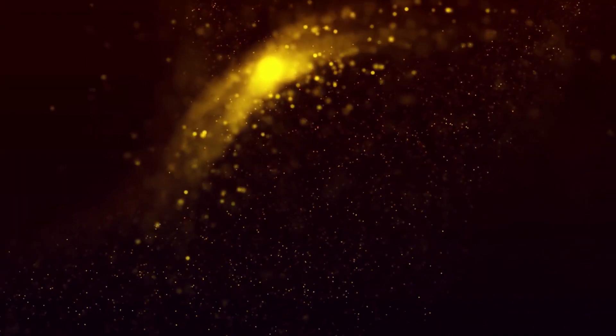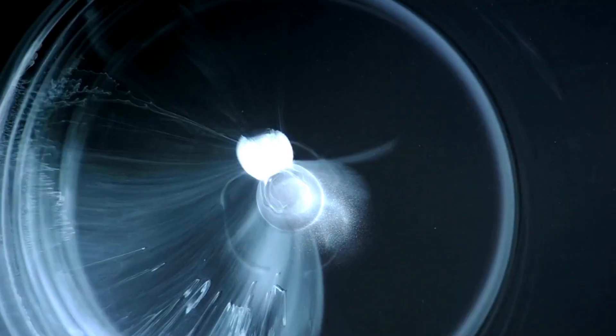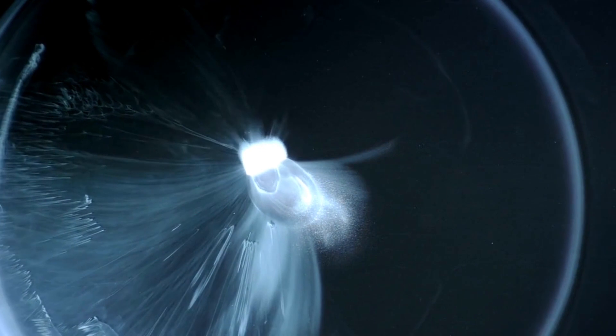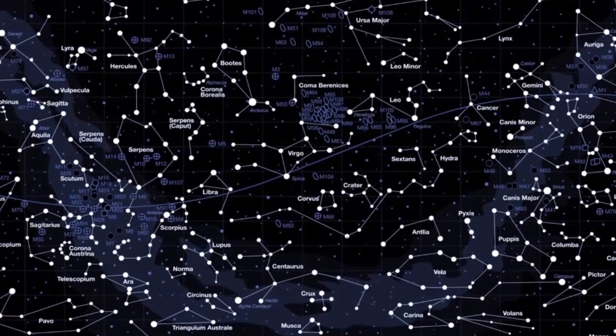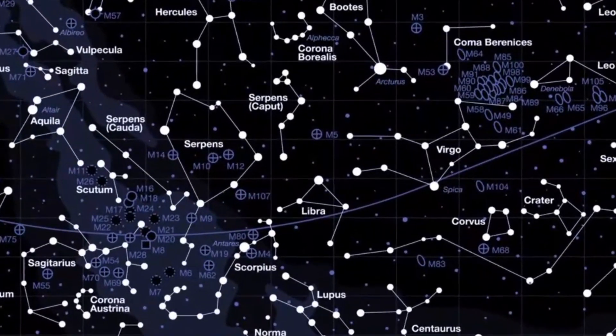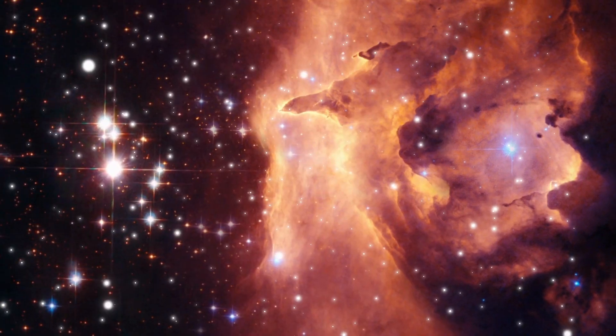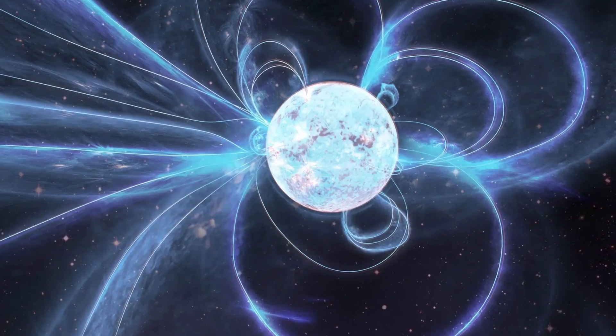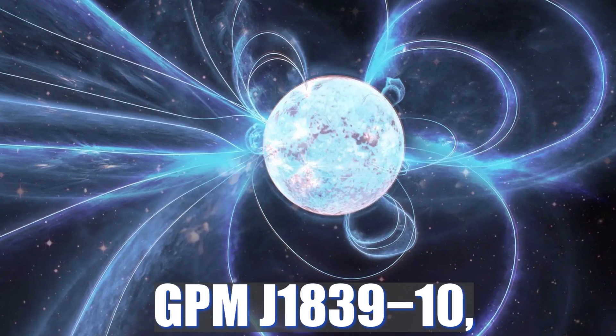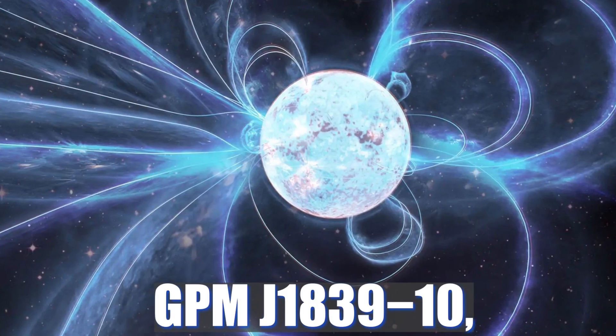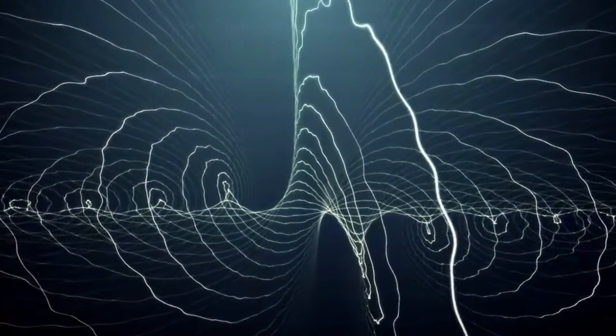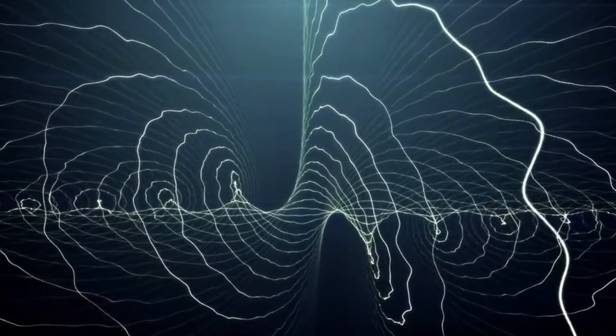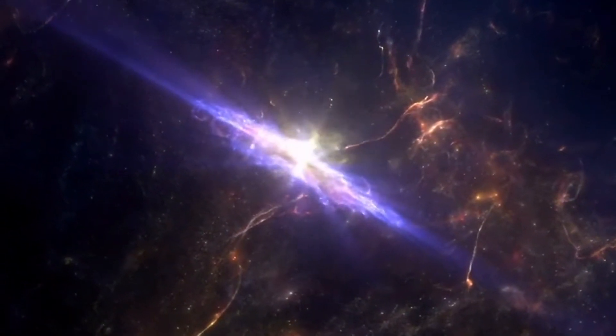This unknown object emitted substantial bursts of energy and emitted radiation every three hours. Astronomers pinpointed the presence of this object in the constellation Scutum, situated 15,000 light-years away from Earth. This celestial body, known as GPM J1839-10, emitted radio waves at intervals of 22 minutes, with each burst of energy lasting as long as five minutes.